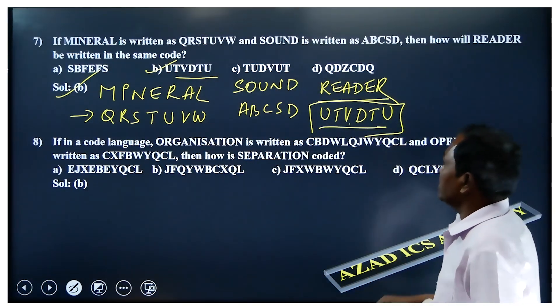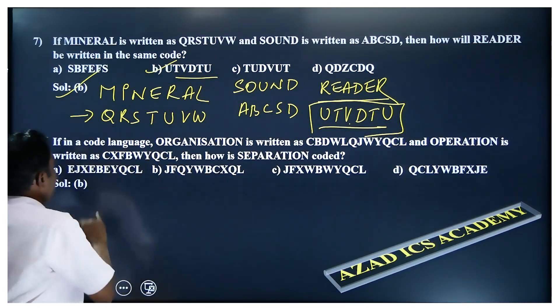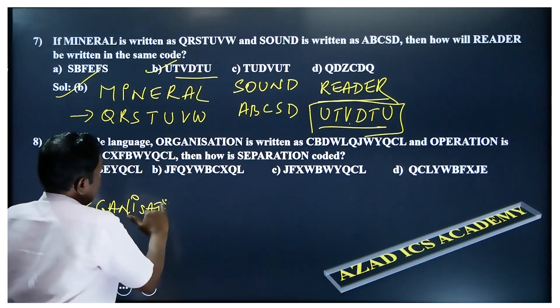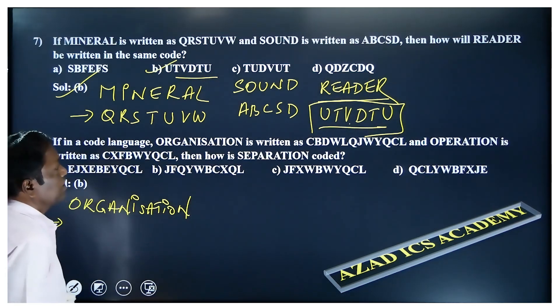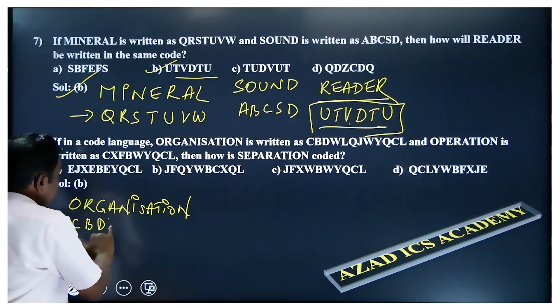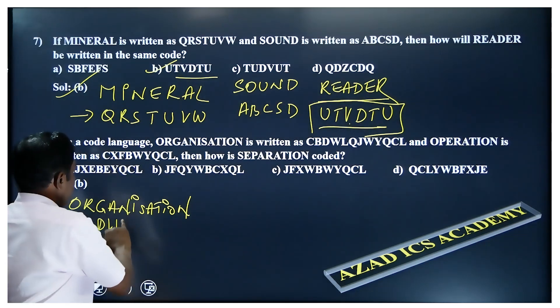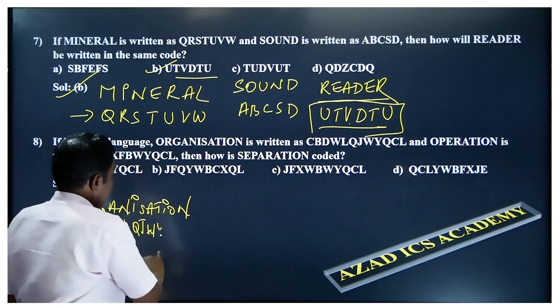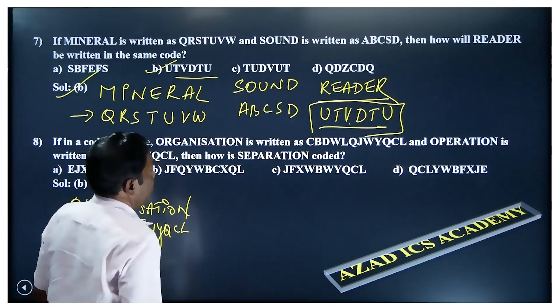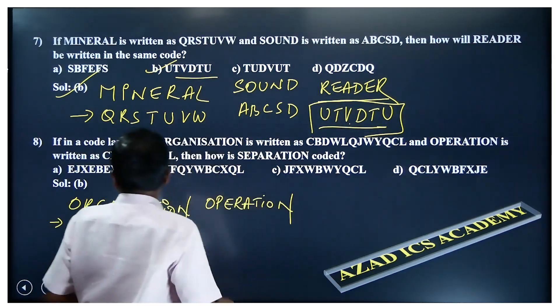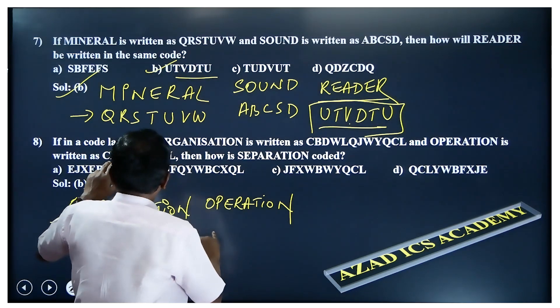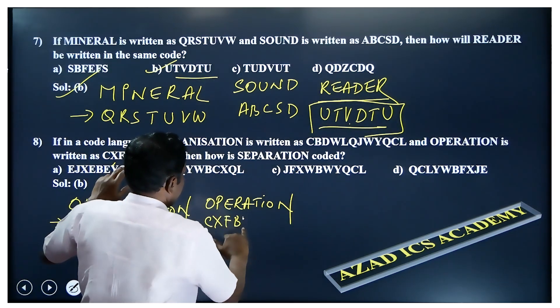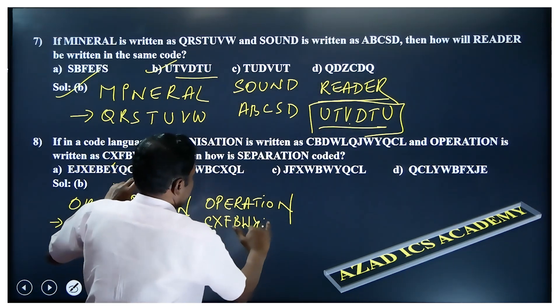Right. In a code language, ORGANIZATION is written as C-B-C-B-D-W-L-Q-L-Q-J-W-Y-Q-C-L, and OPERATION is written as C-X-F-B-W-Y-Q-C-L.